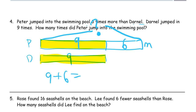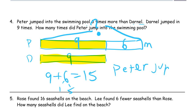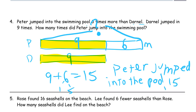If you're thinking about making tens, you might make this six into a number bond for one, because nine and one make ten, and there'd be five more. Ten and five is fifteen. Peter jumped into the pool fifteen times.